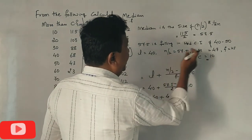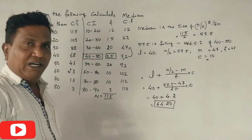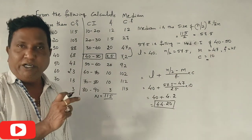In between 40 to 50, the median class interval, the midpoint is 44.2.